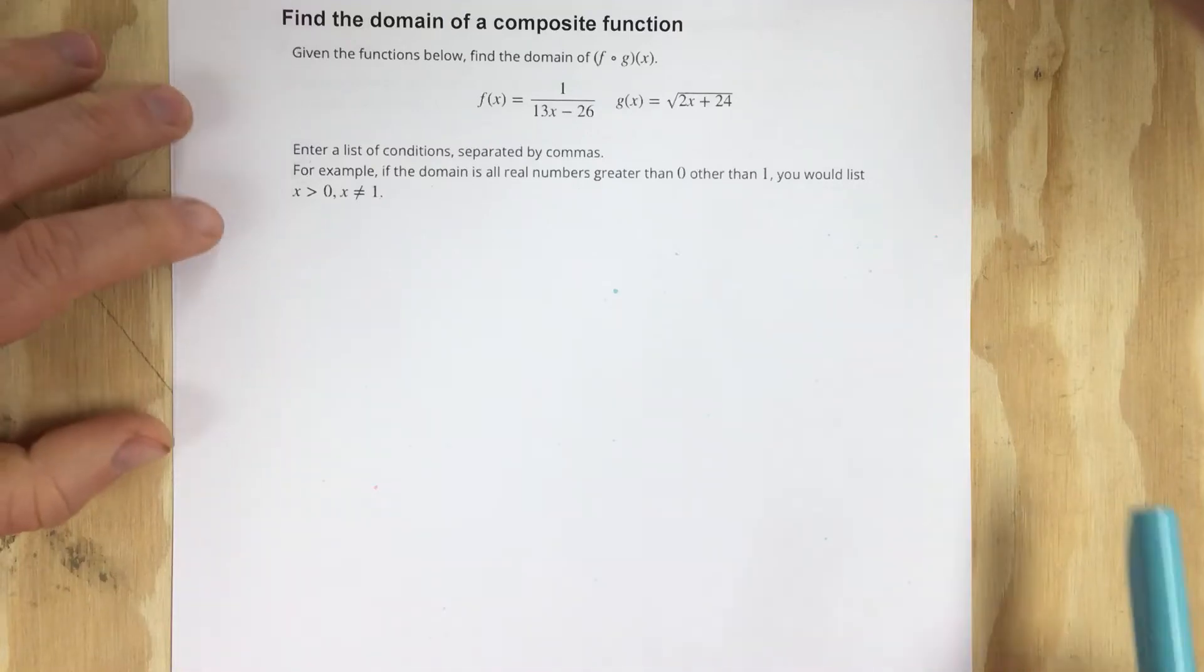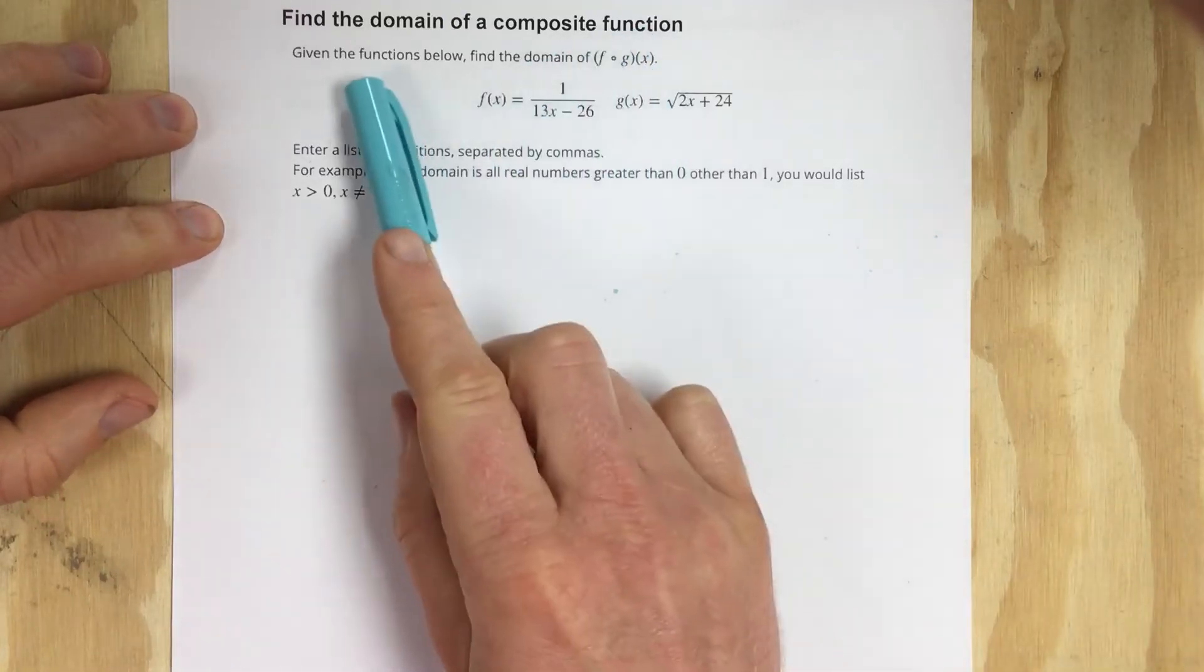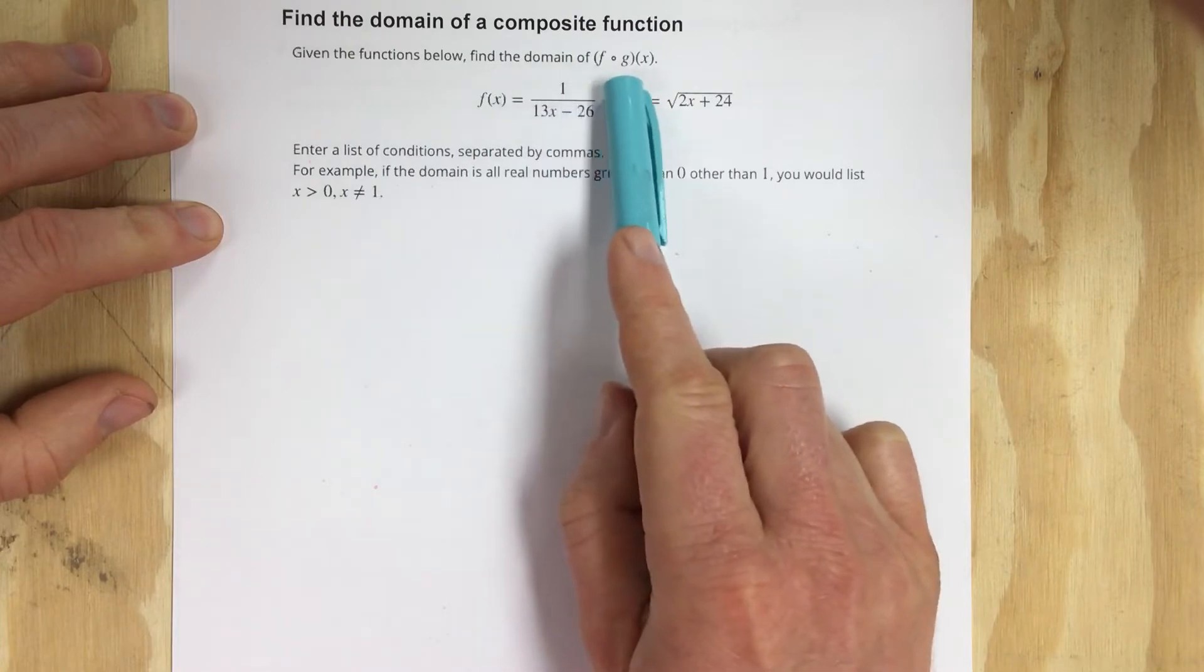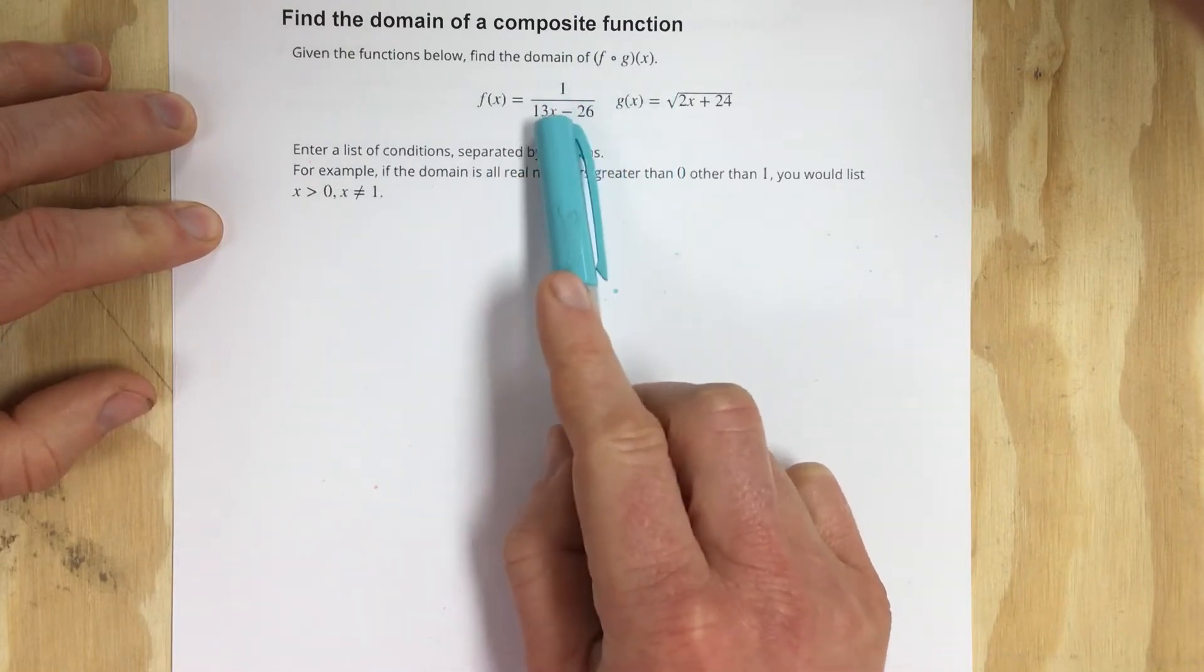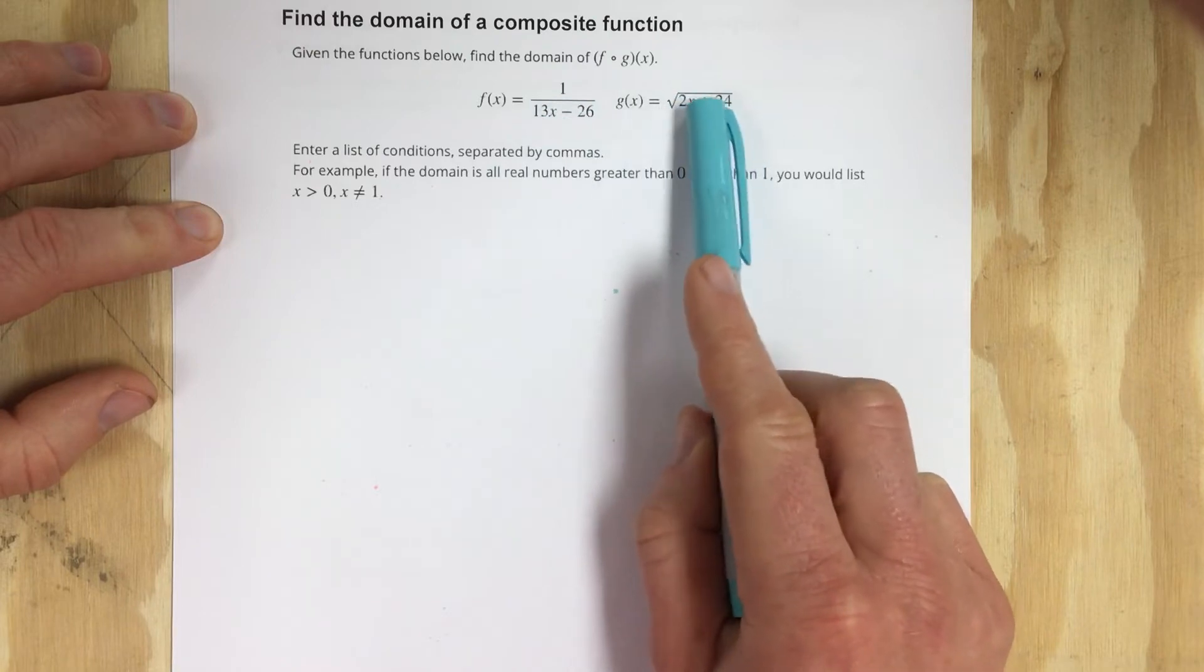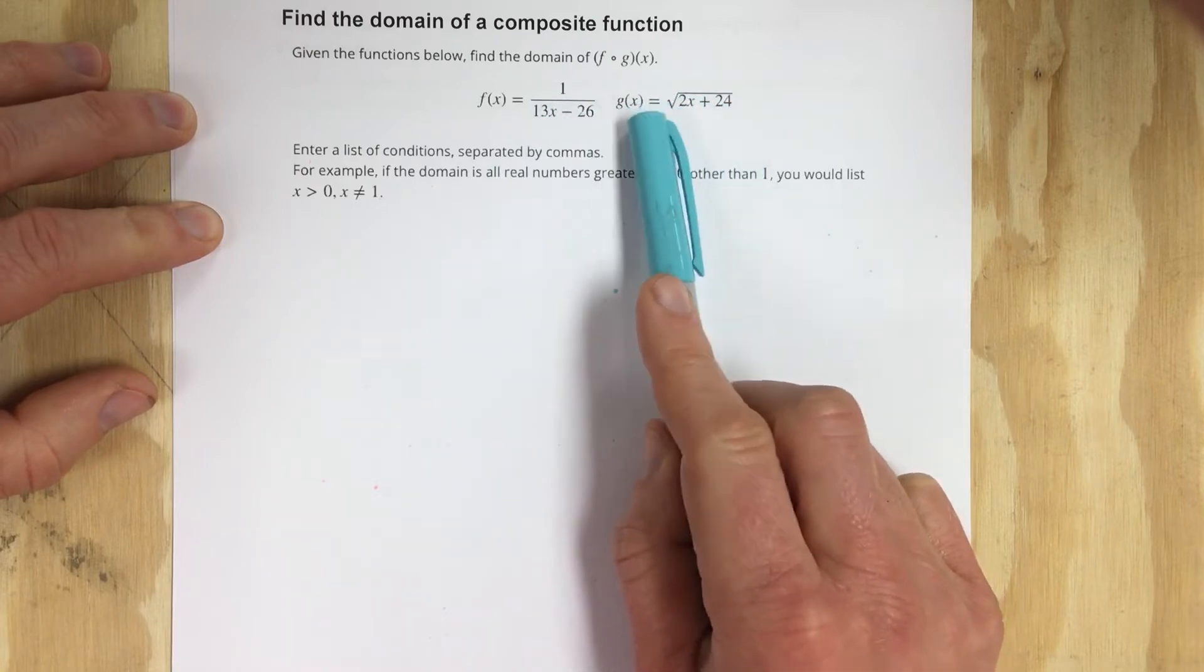In this video we're going to find the domain of a composite function. Given the functions below, find the domain of f of g of x. They give you two functions: a rational function f of x and a radical function or square root function for g of x.